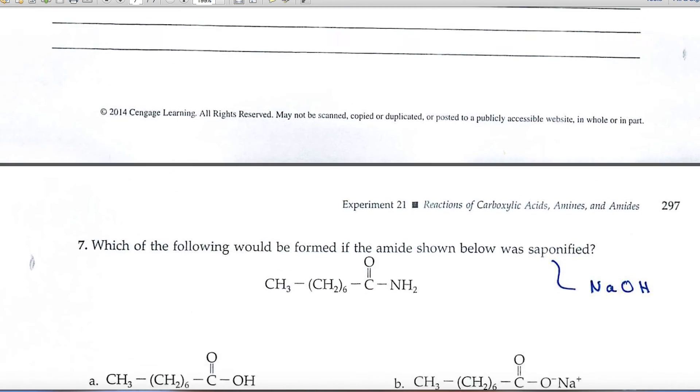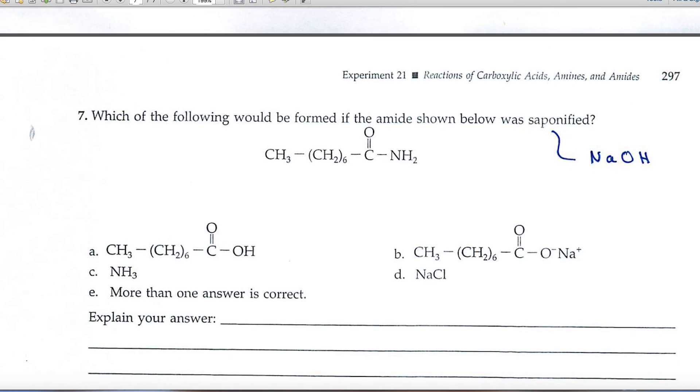Number six, number seven is the last one. And it says that we've got a structure here, and this compound is saponified. Saponified means that it's reacted with sodium hydroxide. Sodium hydroxide is going to rupture this linkage right here. What would the products be? So I hope you have fun with this experiment. Remember to call or email if we can be of help.